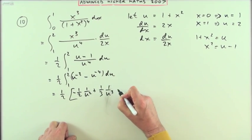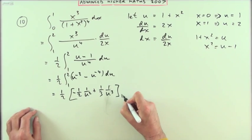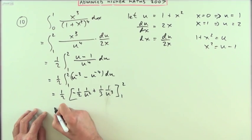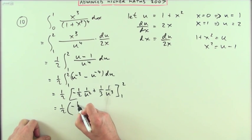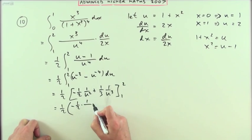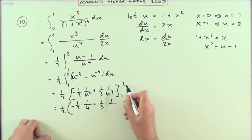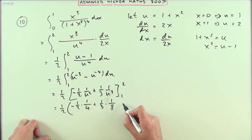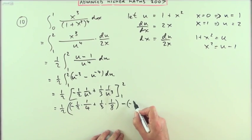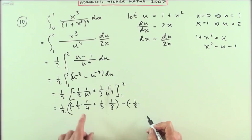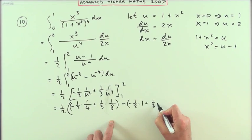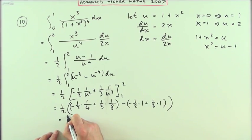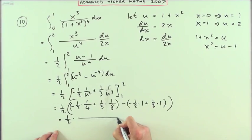So I should have written, whoops, 1 over u cubed, to be evaluated from 1 to 2. So that's a half of, and then all of it together, so it's negative a half times 1 over, and I'll just put it straight in, 4, plus a third times 1 over, and 2 cubed is 8, minus negative a half of 1 over, and when it's 1 it's quite simple it'll just be 1, plus a third of, again that'll just be 1.